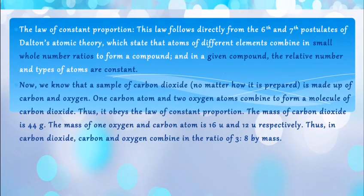Now, the law of constant proportion. This law follows directly from the 6th and 7th postulates of Dalton's atomic theory, which state that atoms of different elements combine in simple whole number ratios to form compounds, and in a given compound, the relative type and number of atoms are constant. We know that a sample of carbon dioxide, no matter how it is prepared, like water, no matter from where it is taken, the formula of water will remain the same, that is H2O.